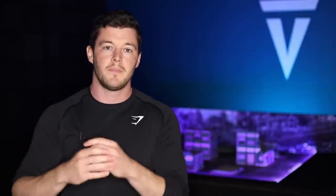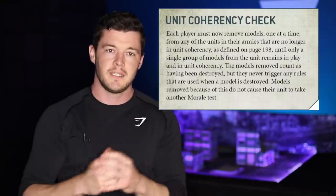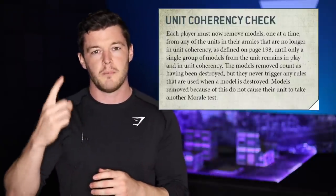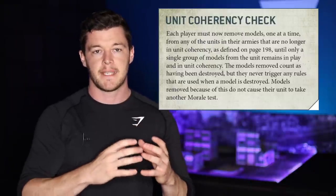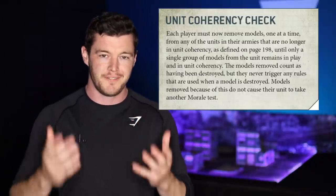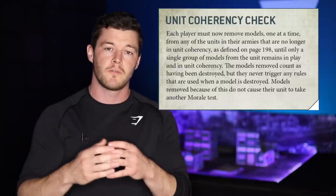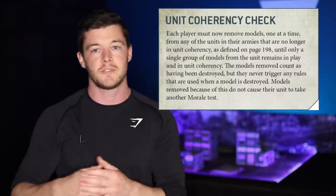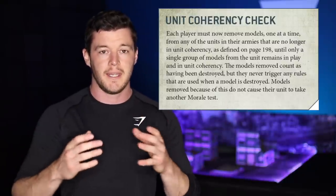In terms of casualties, there is a coherency check that happens just before the morale phase. You're going to lose a model for every single one that isn't in coherency at that time. In another video we'll look at how to remove models effectively so you don't get caught out by this, because if you're removing the wrong models you might find yourself losing entire squads very quickly, until you end up with one single group of models still in coherency.